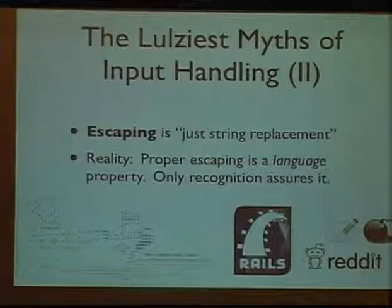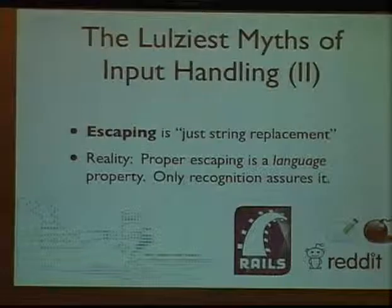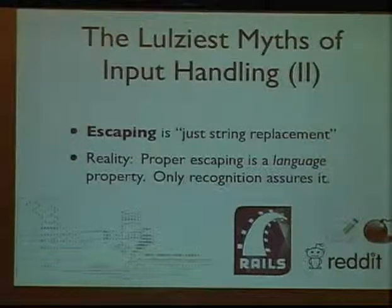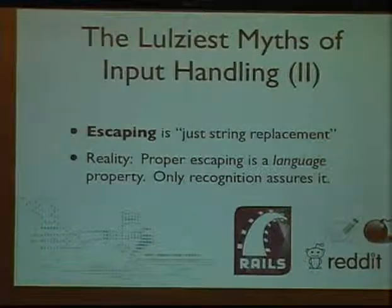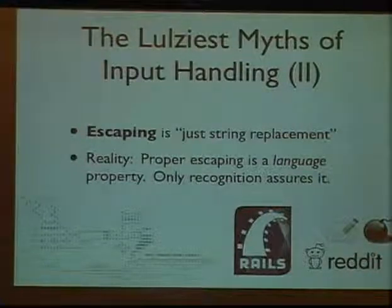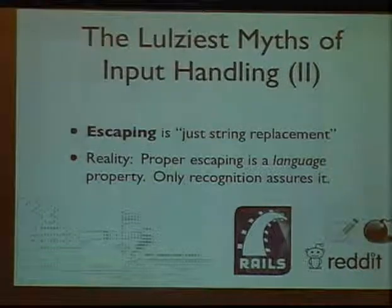As the recent XKCD pointed out: I had 99 problems, then I used regular expressions, now I have 100 problems. Another variant of the same myth is that you can do escaping. Your correctness assumptions are actually assumptions of a formal language, and there's an automaton that should be able to recognize that formal language. If you treat escaping as just string replacement, there are people who will take your code and build a weird machine out of it, because escaping is also computation — it's also a kind of automaton.